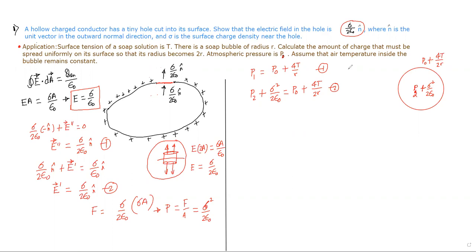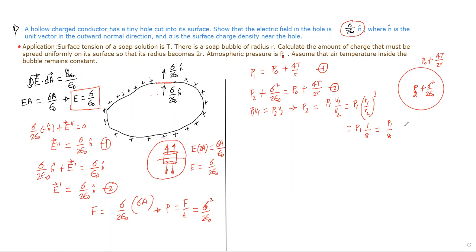We have the additional condition that air temperature inside the bubble is constant, so P₁V₁ = P₂V₂. Therefore P₂ = P₁ · (V₁/V₂) = P₁ · (R₁/R₂)³. The new radius is double the previous, so it is 1/8. Hence P₂ = P₁/8. This is our third equation.